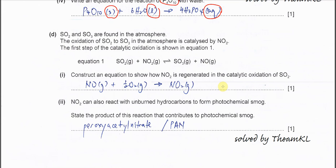Part D: SO2 and SO3 are found in the atmosphere. We can oxidize SO2 to SO3 using NO2. Equation 1 shows the oxidation of SO2 to SO3 using this gas. Part 1: Construct an equation to show NO2 is regenerated in the catalytic oxidation of SO2. Very easy, you just need to put NO with oxygen forms NO2. All gas.